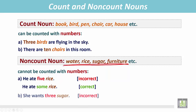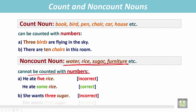Another example: 'she wants three sugar' is wrong because sugar cannot be counted with numbers — it is an uncountable noun. The correct answer is 'she wants a little sugar.' Since it is an uncountable noun, we use 'little' before it.